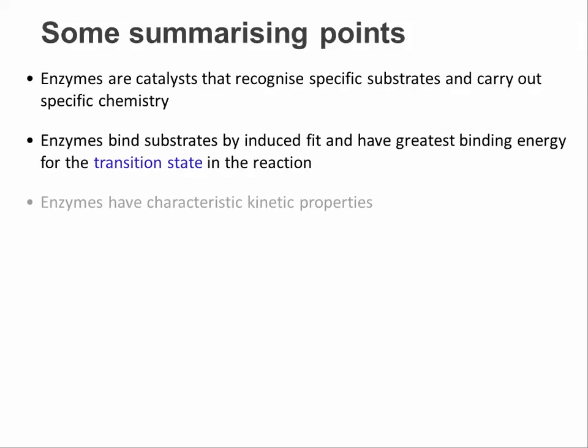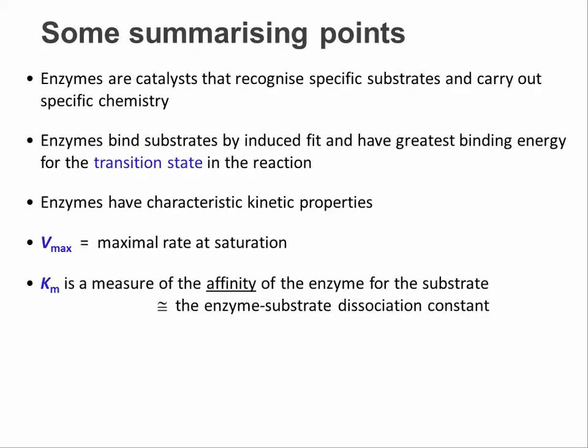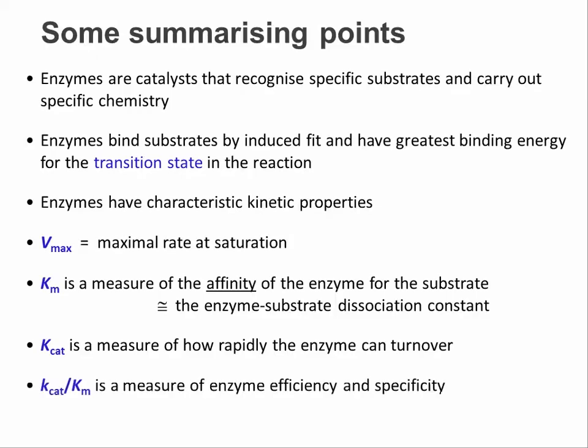Finally, we have defined a couple of kinetic properties. The maximal rate, Vmax, at saturating substrate concentrations. The Michaelis constant, Km, which is a measure of the affinity of an enzyme for its substrate. The catalytic constant, Kcat, which is a measure of how rapidly the enzyme can turn over substrate. And Kcat over Km, a measure of enzyme efficiency and specificity.